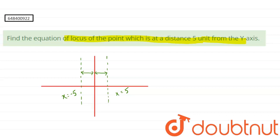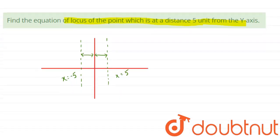These two will be my locus. And so for combined answer, I can write down mod x is equal to 5. This is my locus.